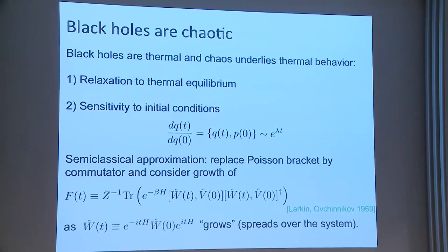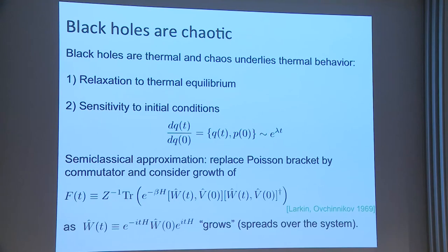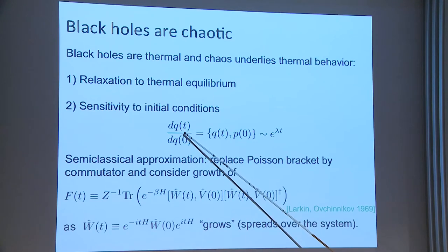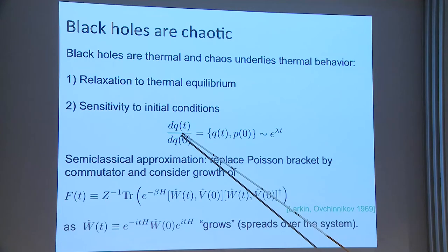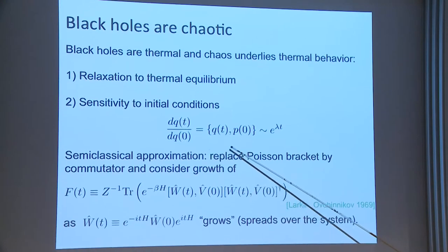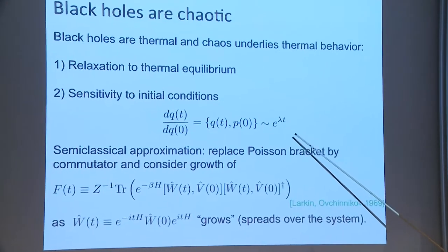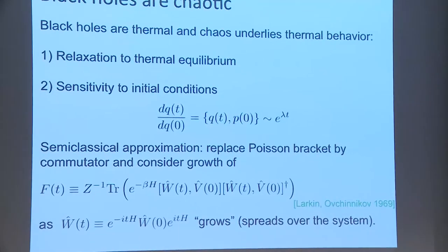One manifestation is that chaos governs the relaxation to thermal equilibrium when you perturb a system. A second aspect of chaos is strong sensitivity to initial conditions. In classical models, the sensitivity is typically captured by Lyapunov exponents. You can imagine q to be the position of some particle, and the dependence of a position at some later time on the position at an earlier time is given by a Poisson bracket, which typically diverges exponentially, where lambda is the Lyapunov exponent.